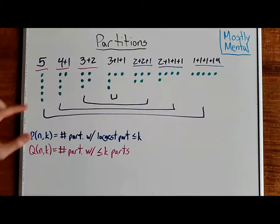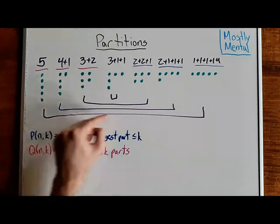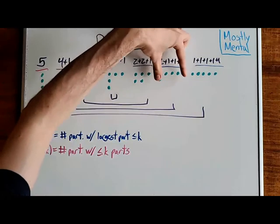So, for example, this one here has largest part 4 and 2 parts, and it's paired with this one, which has largest part 2 and 4 parts.